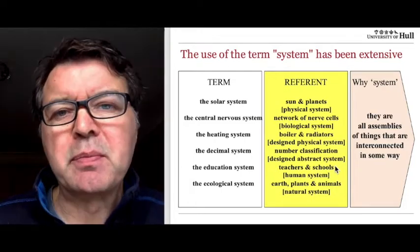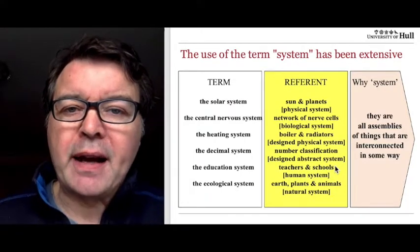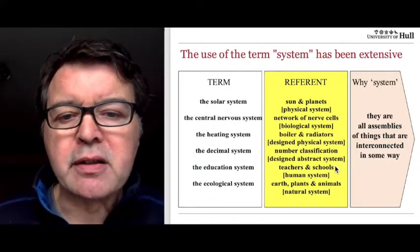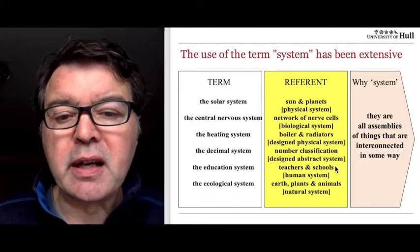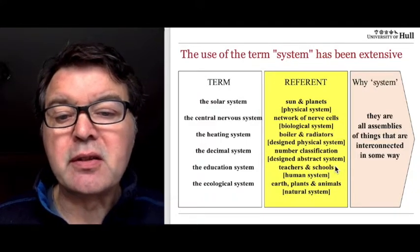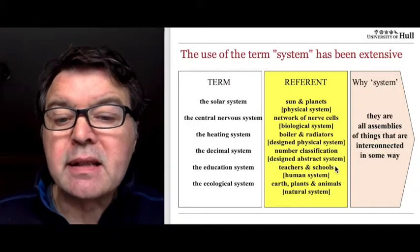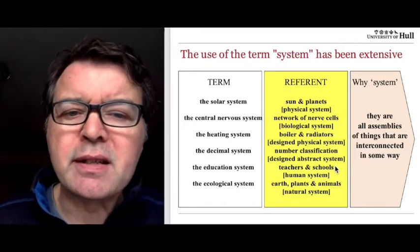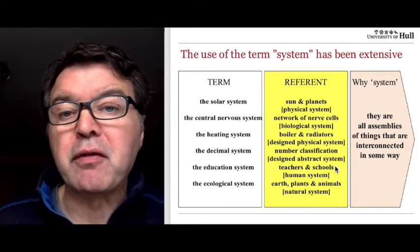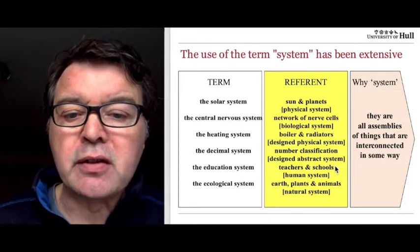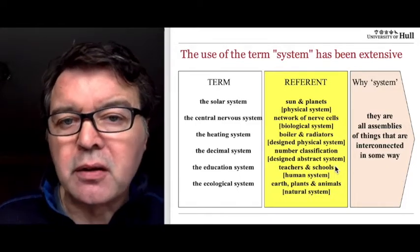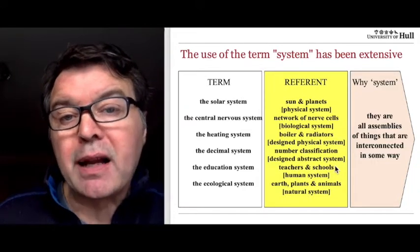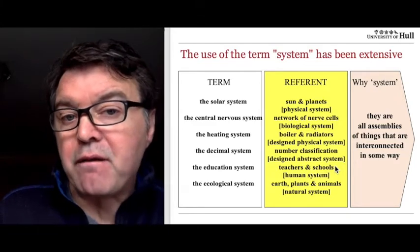The word system has been incredibly effective and has been used in all sorts of areas. If we think of some examples — the solar system, the central nervous system, the heating system, the decimal system, the education system, the ecological system — they all use the term system but they're all quite different. The solar system is the sun and planets, a physical system, whereas the central nervous system is a network of nerve cells, a biological system — a very different type of system.